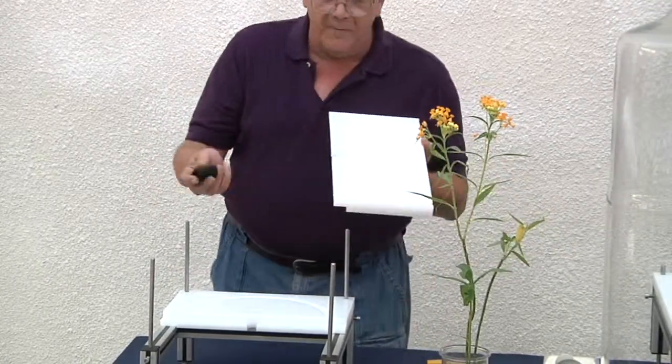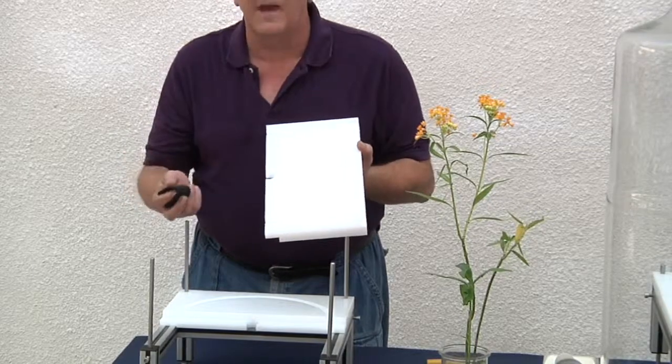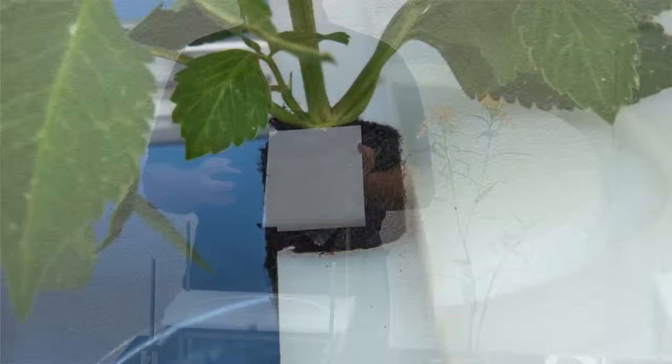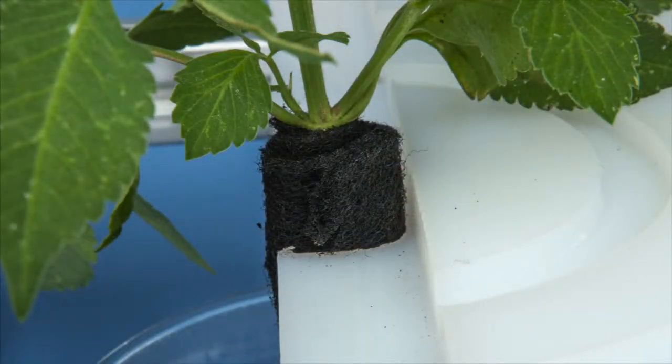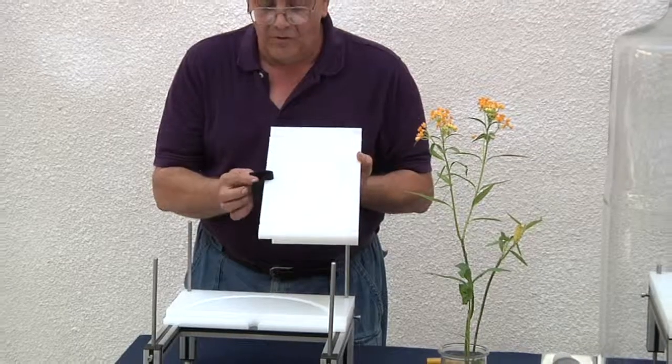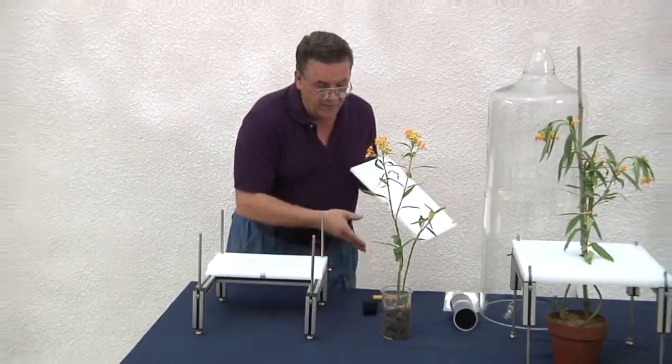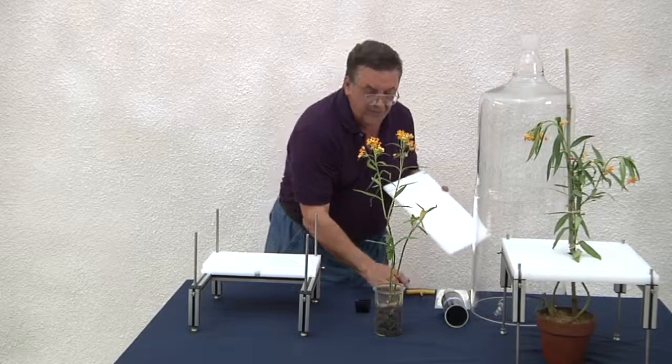To keep air from entering the system that is contaminated by biologicals or semiochemicals, we wrap the stem in activated charcoal. This allows air to flow in but not to affect our tests.